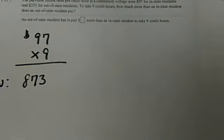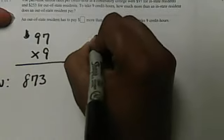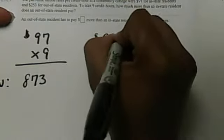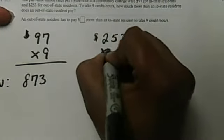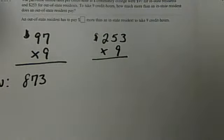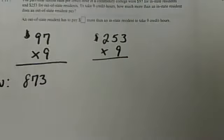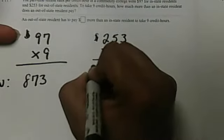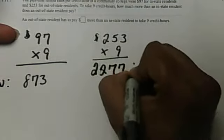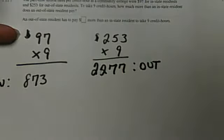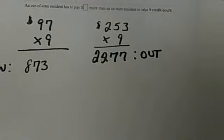Now how much does an out-of-state student pay? An out-of-state student pays $253 a credit for those same nine credits. So they will be paying $253 times nine, which as you can see is $2,277. And this is for the out-of-state student, the out-of-county student.